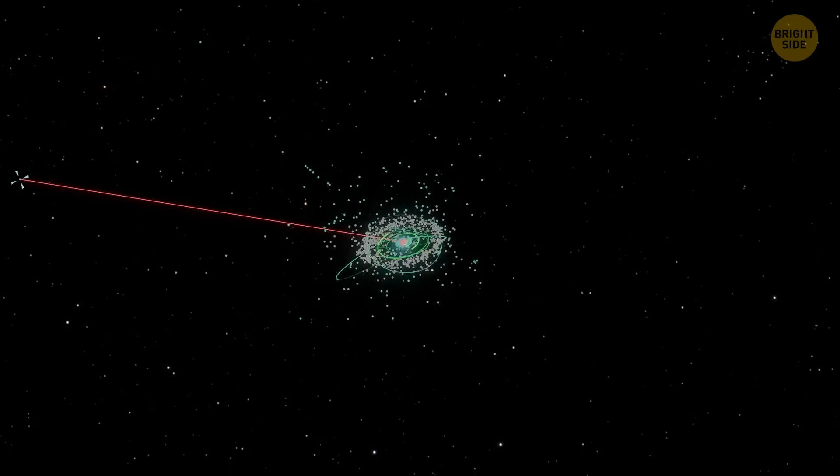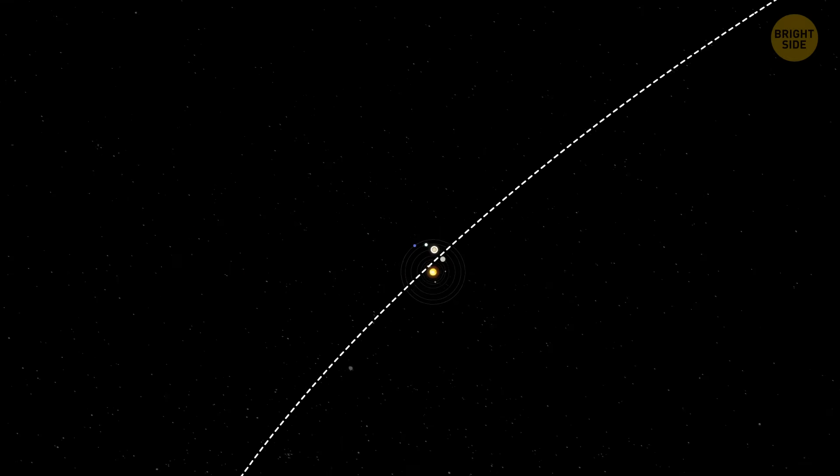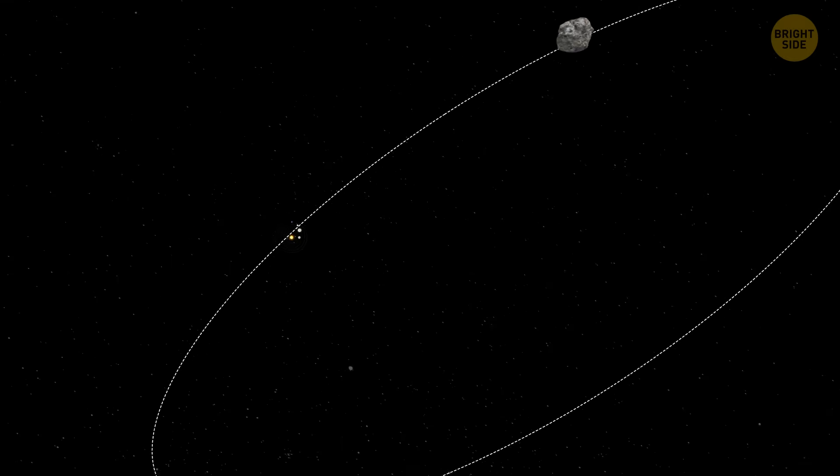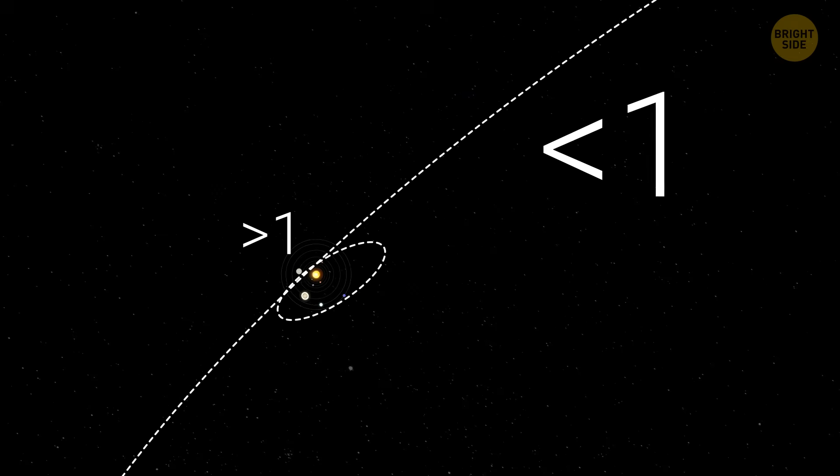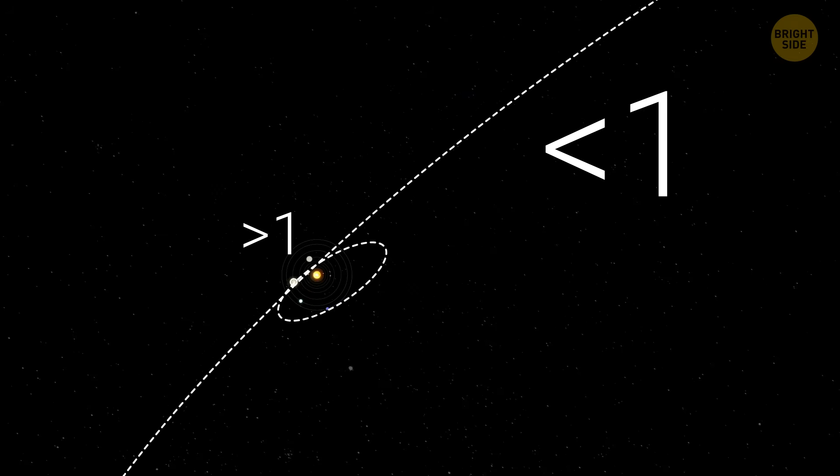When they redo the orbit from that point, its eccentricity, the number that tells you if it's from outside the solar system, usually drops below 1, which means it's still part of our solar system.